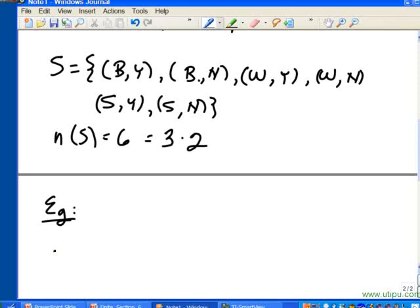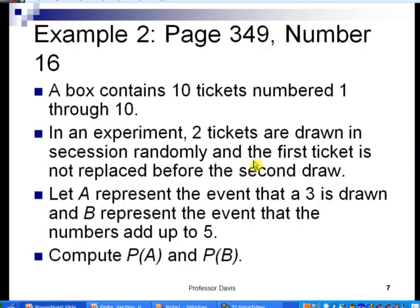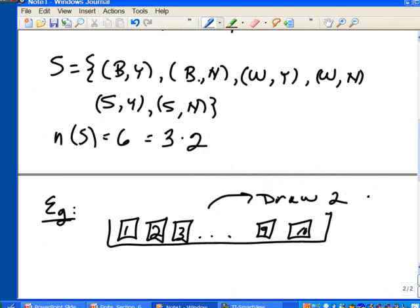We need to find the number of outcomes and then find the cardinality of events associated with A and B. First, think of what we have here. You got this box, and it's got these tickets numbered 1 through 10. And we're going to draw 2. Now, notice here, let's go back to our example. It says the first ticket is not replaced before the second draw. So we're going to draw 2 without replacement.